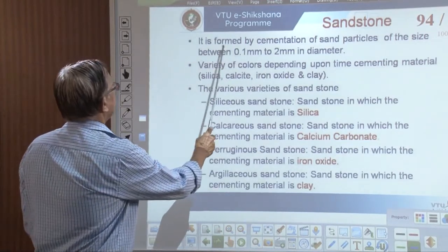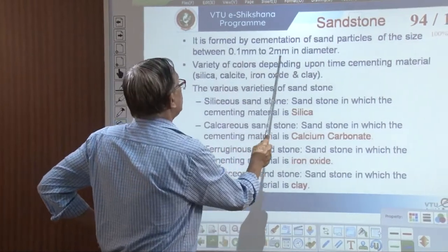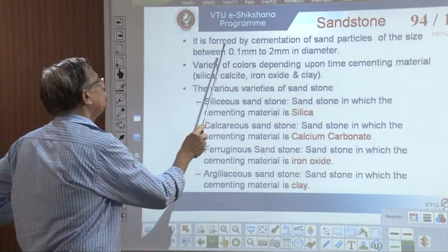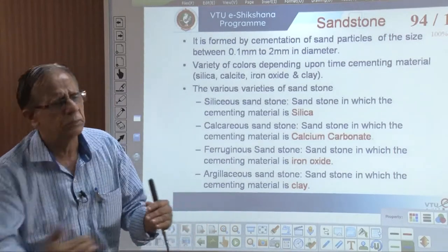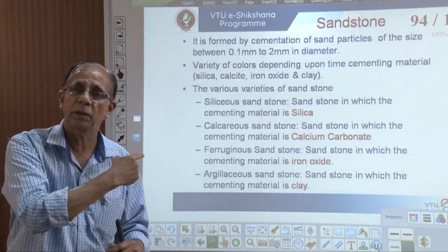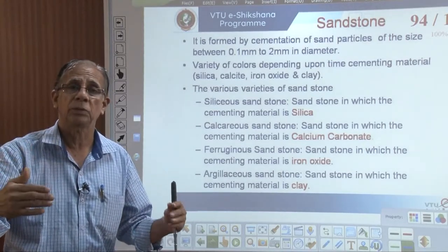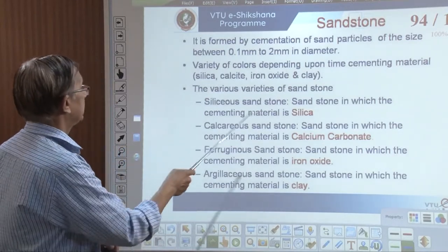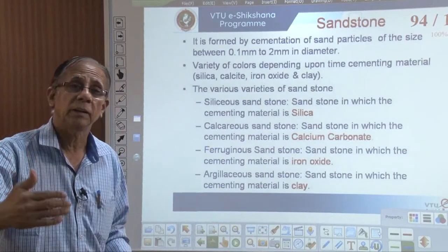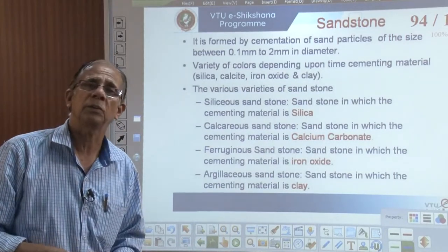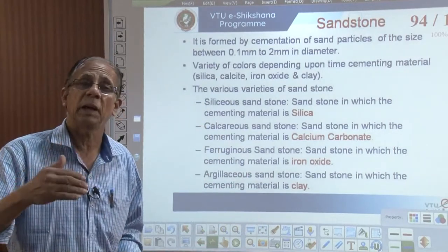Sandstone is formed by cementation of sand particles. The particle size is between 0.1 mm to 2 mm in diameter. It is not too fine, so molecular attractive force does not permit easy flow of water as we have in clay, but it is fortunately coarser than that. The inter-surface or molecular attractive force is less as compared to that of clay.